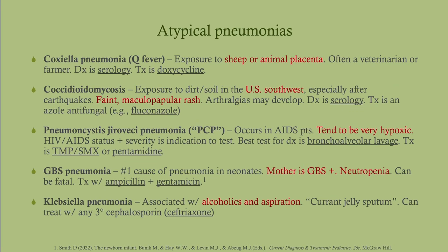Pneumocystis jirovecii pneumonia, also called PCP pneumonia based on the old name Pneumocystis carinii, occurs in AIDS patients who are very hypoxic. If you have a hypoxic patient with a history of HIV/AIDS, think PCP. The best test is bronchoalveolar lavage. Treatment is trimethoprim-sulfamethoxazole, or pentamidine if allergic to sulfa.